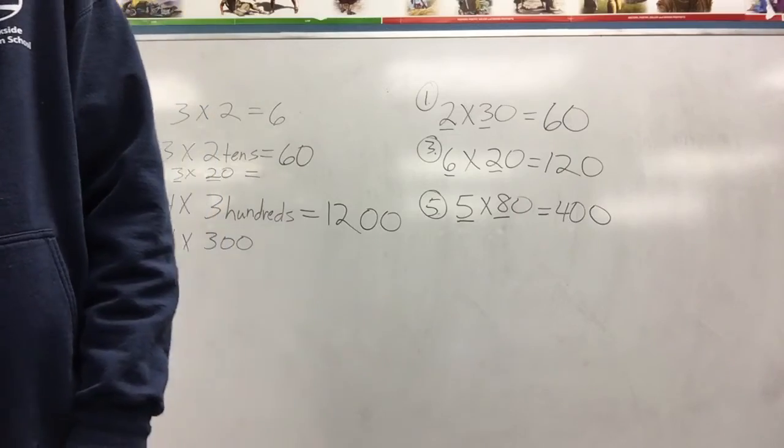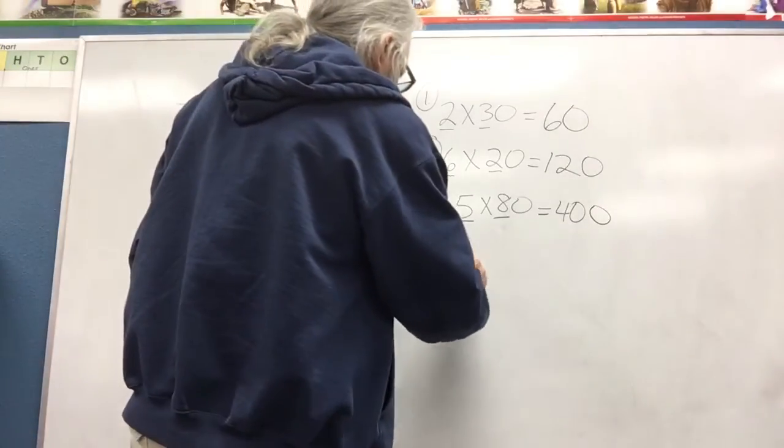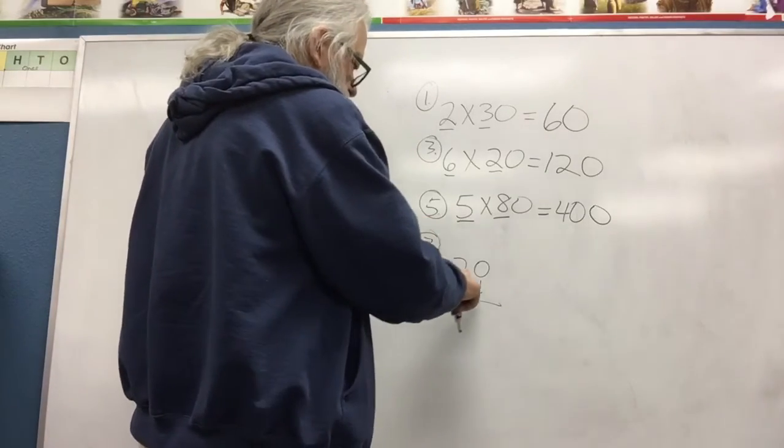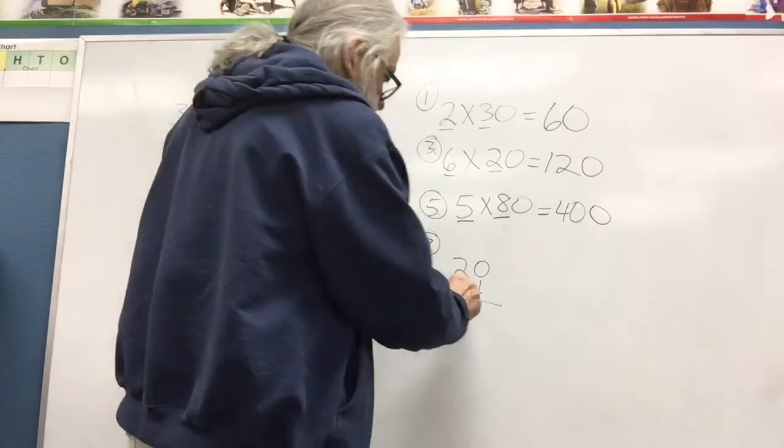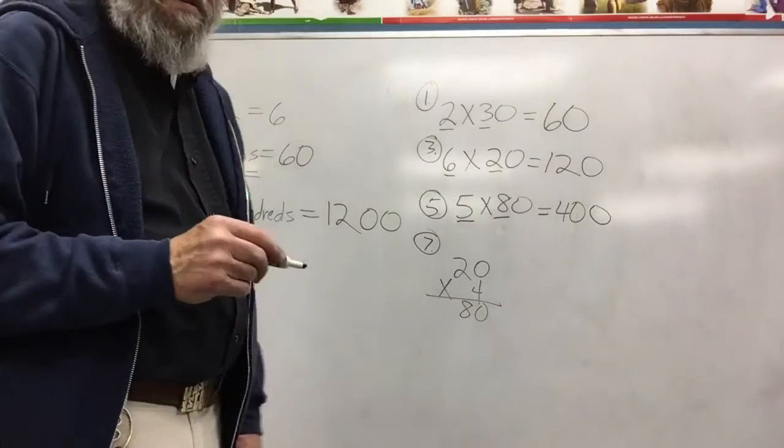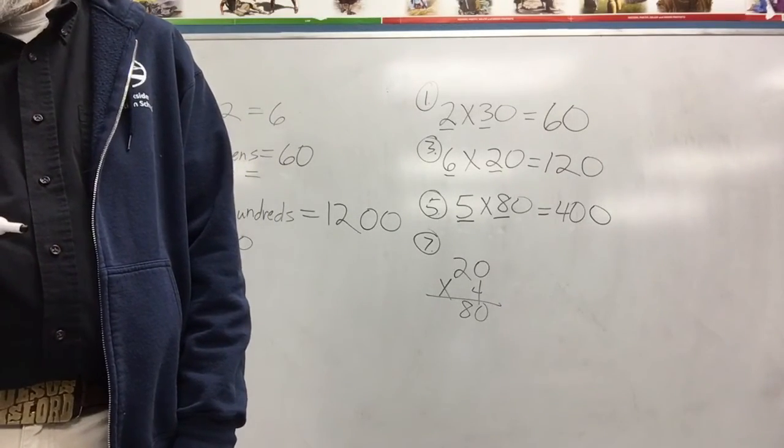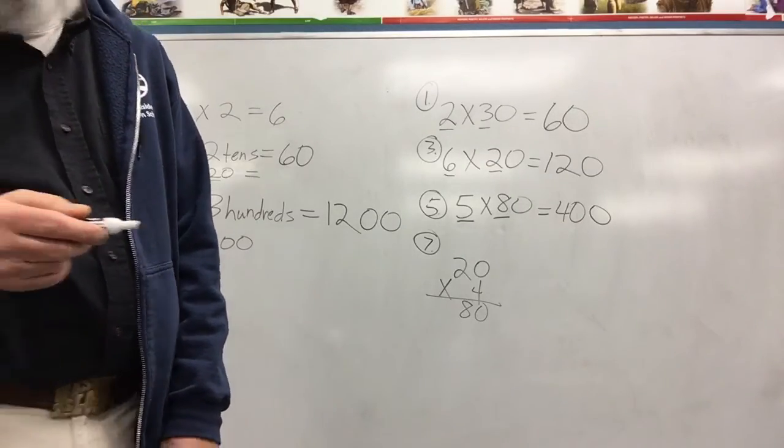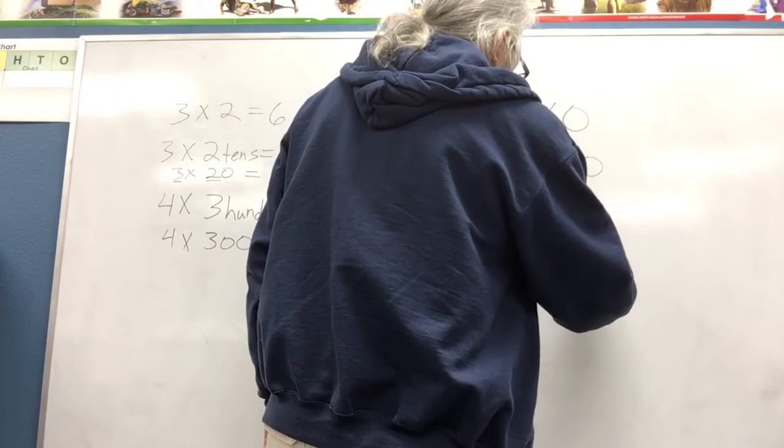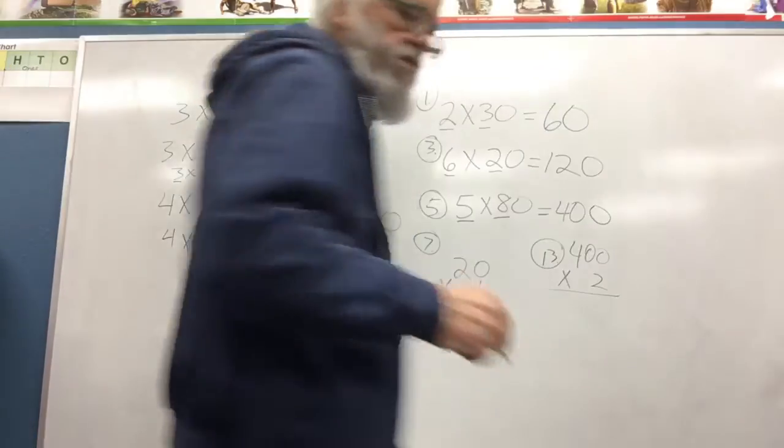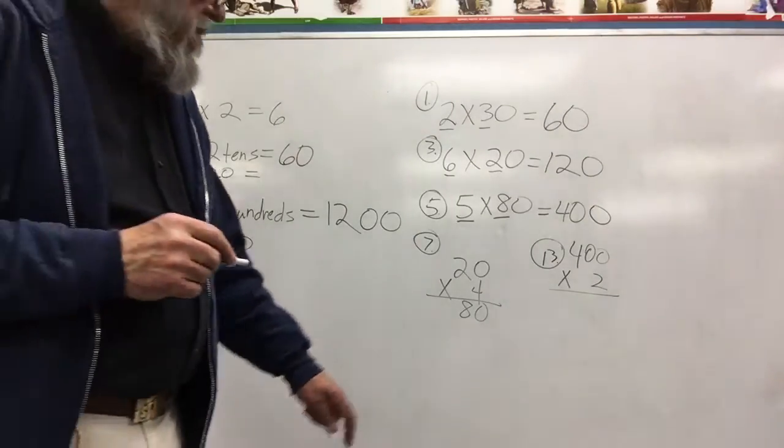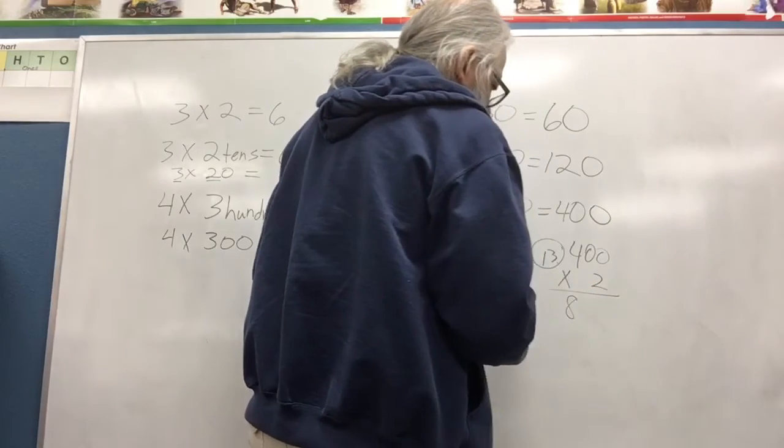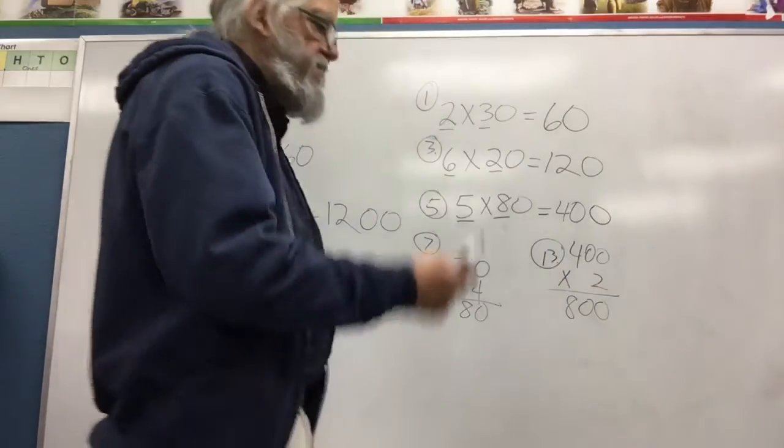And so when you go to number 7, which is 20 times 4. Again, you're just going to think 4 times 2, which is 8. And you're going to have 8 with a 0 after it. So that's all you're going to do. Number 13. Yeah, we'll do number 13. So number 13 is 400 times 2. And so you're just going to do 2 times 4, which is 8. But I had two 0s here because it's 400. So I'm going to have two 0s down there.